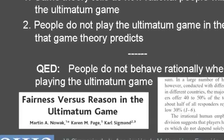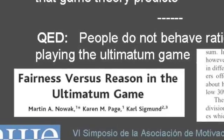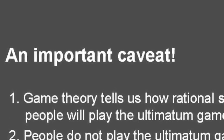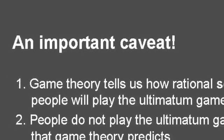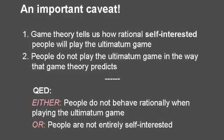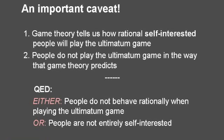Many people have interpreted these findings as showing that people are irrational. The argument seems simple: game theory tells us how rational people will play the ultimatum game, but people don't play the game this way. Therefore, it follows that people do not behave rationally when playing the ultimatum game. But wait a moment — the first premise in that argument is not quite correct. Game theory doesn't tell us how rational people play games; it tells us how rational, self-interested people play games. So the fact that people don't play the ultimatum game as predicted tells us that people are either not entirely rational, or not entirely self-interested, or both.